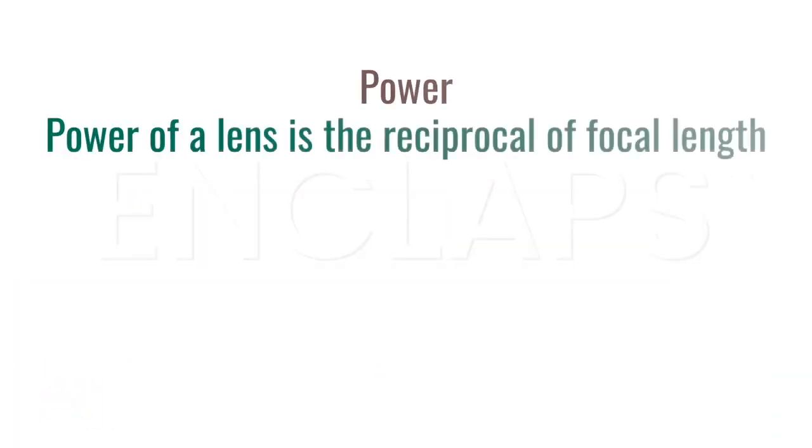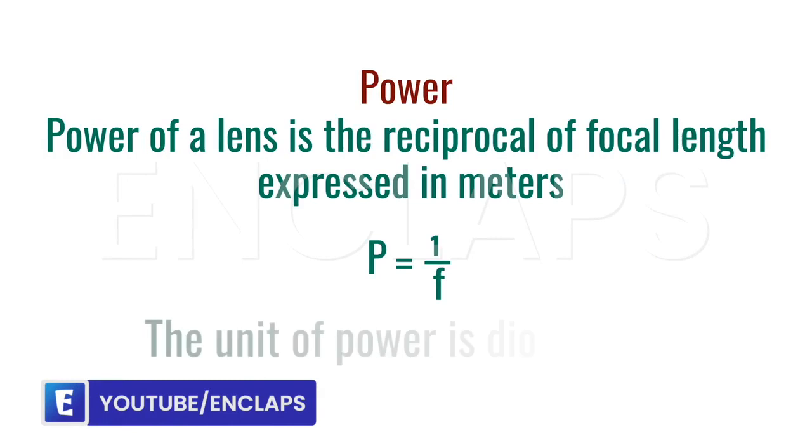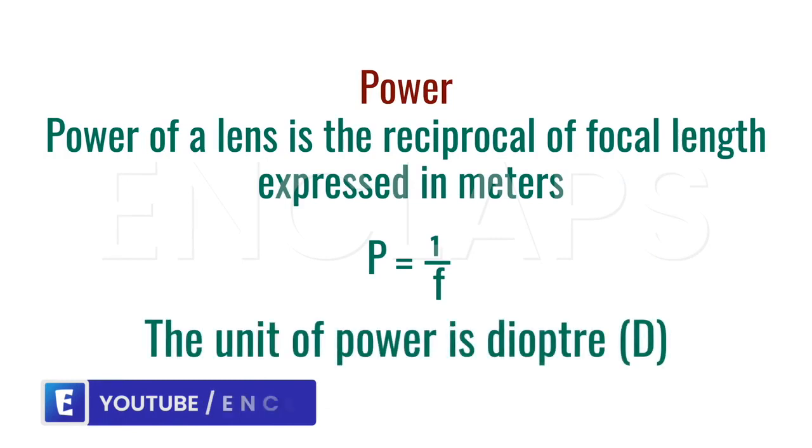Power is a term related to the focal length of a lens. Power of a lens is the reciprocal of the focal length expressed in meters. Power P is equal to 1 divided by f. The unit of power is diopter which is denoted by the letter capital D.